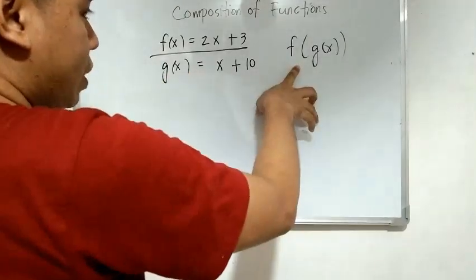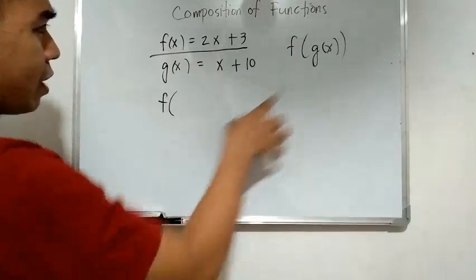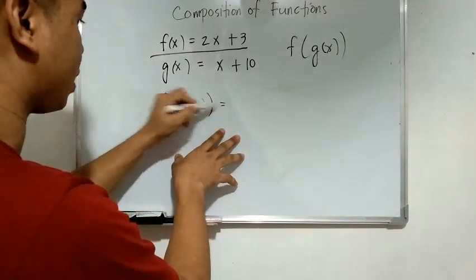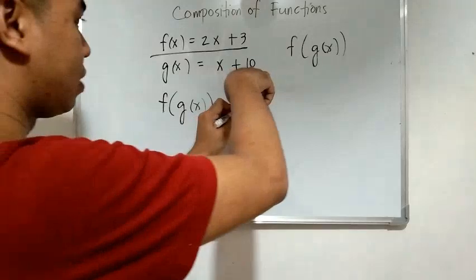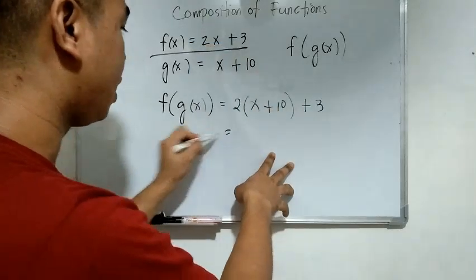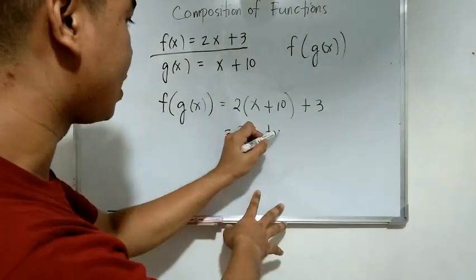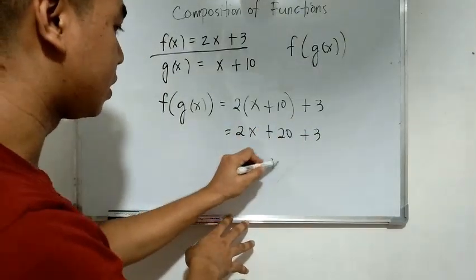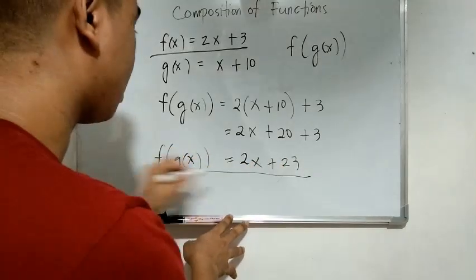So what is our main function? It is f of x. What is our input? g of x. g of x is x plus 10. So just replace x with x plus 10, giving us 2 times (x plus 10) plus 3. Then distribute 2 inside the parenthesis: we have 2x plus 20 plus 3. Then combine constants, and we have 2x plus 23. So f of g of x is equal to 2x plus 23.